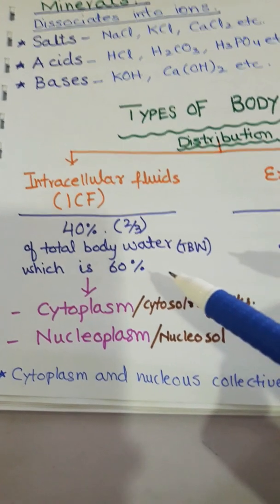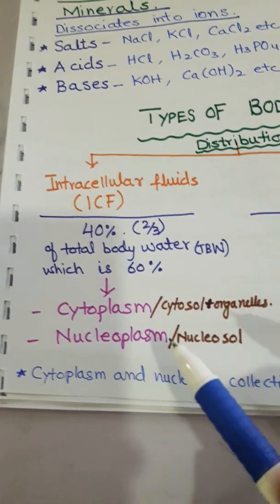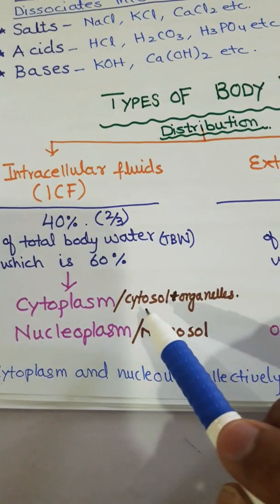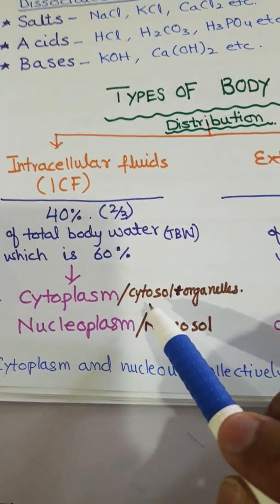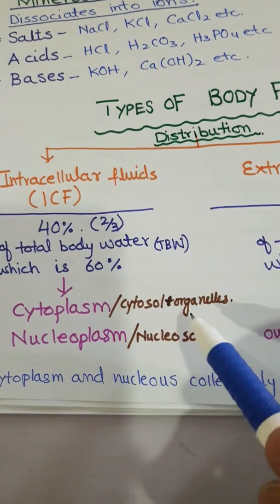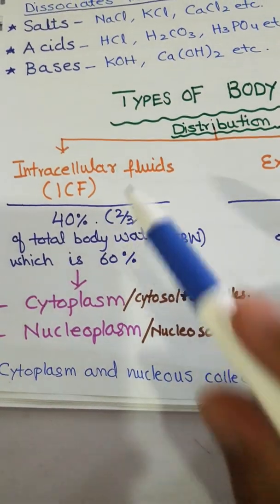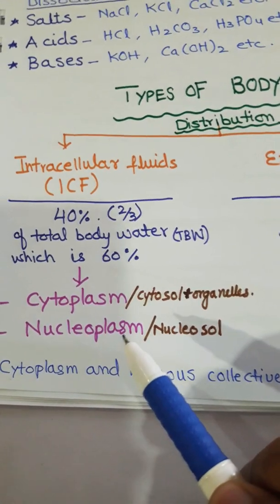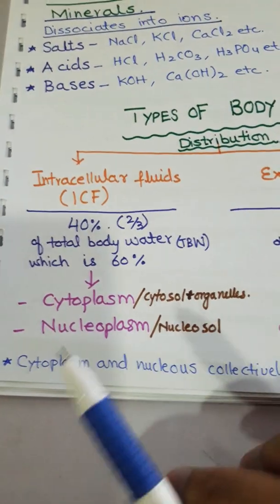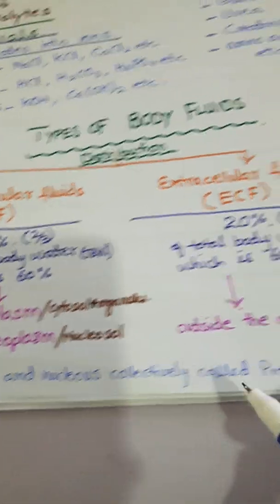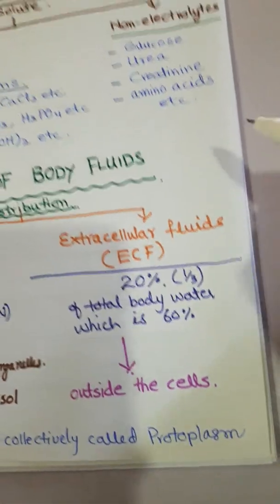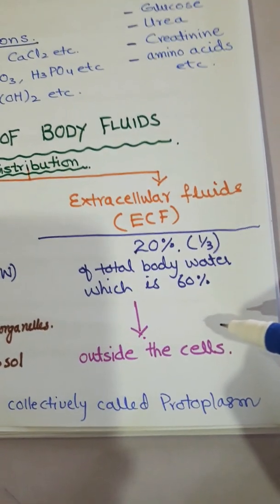Intracellular fluids are fluids present inside the cell. This includes the cytoplasm, which contains cytosol — the jelly-like material — and the organelles. Nucleoplasm inside the nucleus contains nucleosol. Cytoplasm and nucleus together are collectively called protoplasm, so intracellular fluid is essentially the fluid inside the protoplasm.